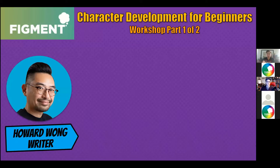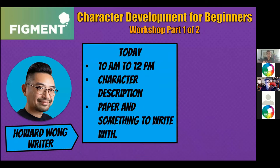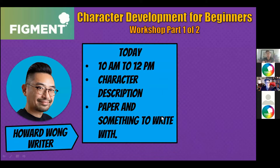I'm Howard Wong, mainly known as a writer. Today we're going to be fast-forwarding our timeline a bit. We'll see if we can get a break in or two if people need it. We're going to go through character descriptions — what you need is paper and something to write with. If you don't have it, grab it now so you can follow along.